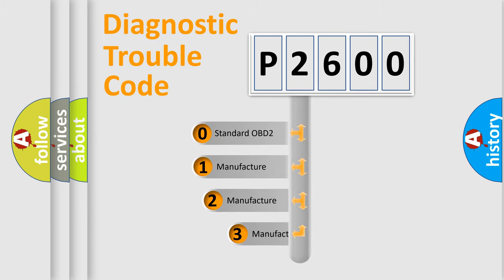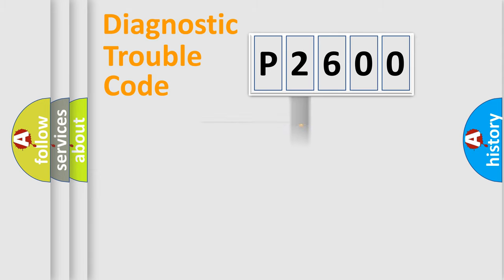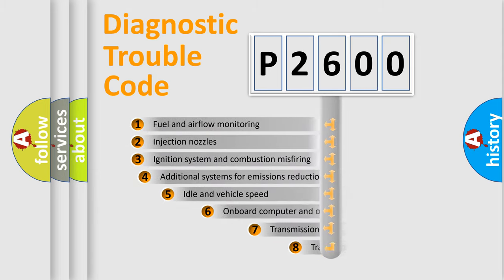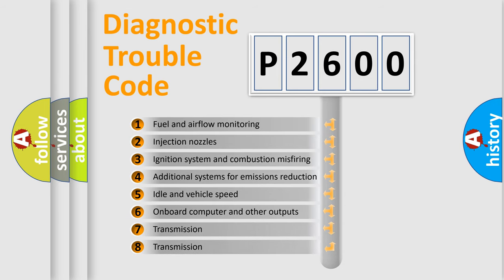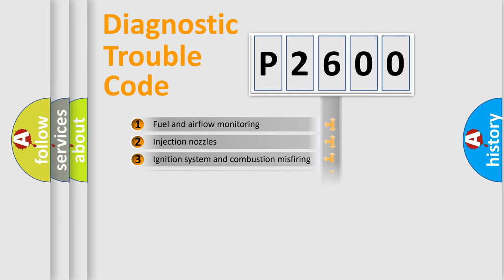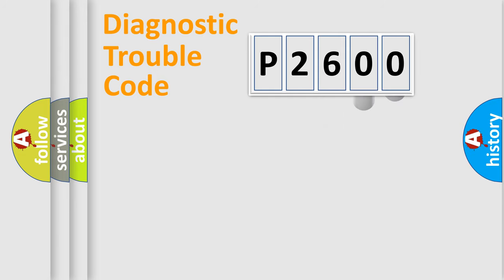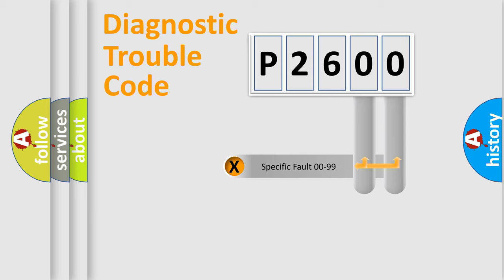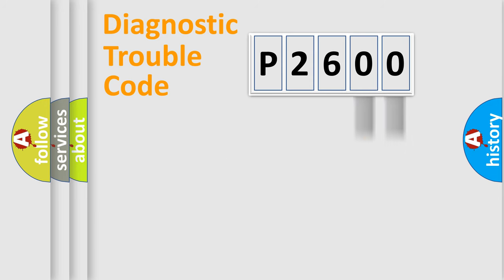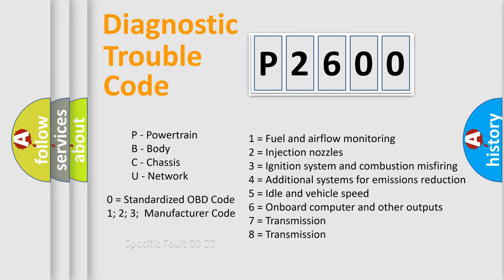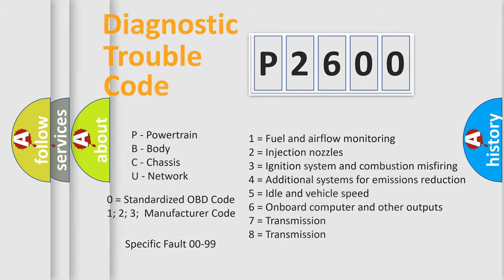If the second character is expressed as zero, it is a standardized error. In the case of numbers 1, 2, or 3, it is a more specific expression of a car-specific error. The third character specifies a subset of errors. This division is valid only for the standardized DTC code, where only the last two characters define the specific fault of the group. Such a division is valid only if the second character code is expressed by the number zero.